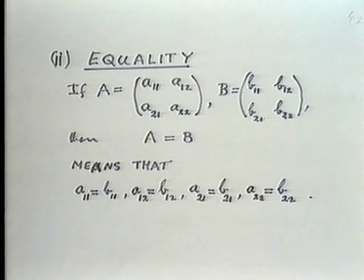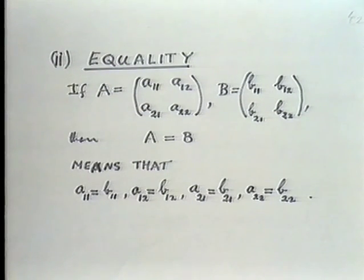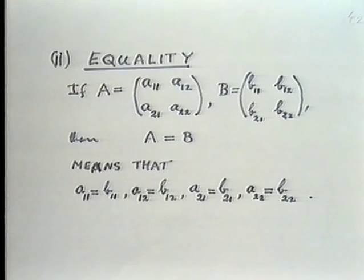Beginning then with equality: what do we mean by saying that two matrices are equal? For the purpose of this talk a matrix will always be a two-by-two matrix. Supposing we have two such matrices A = [a11, a12, ...] and another matrix B = [b11, b12, ...], we shall say that A is equal to B if and only if all corresponding coefficients are the same: a11 equals b11, a12 equals b12, and so on. In other words, if two matrices are equal then this means we have four equations between the four coefficients.